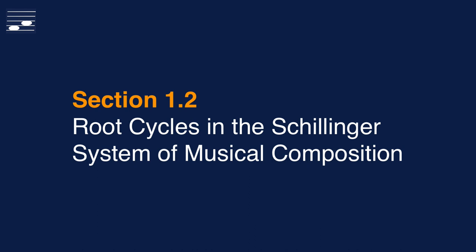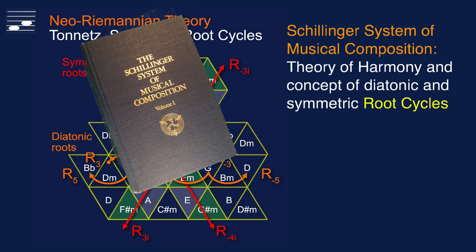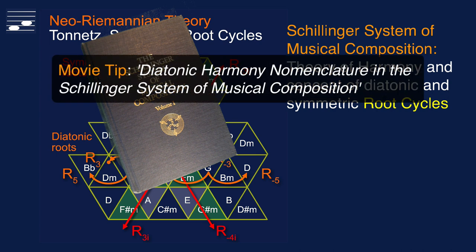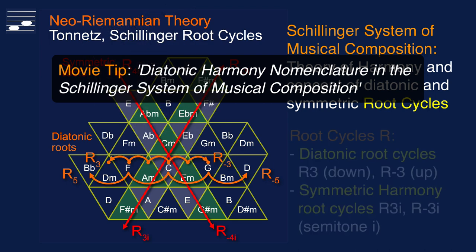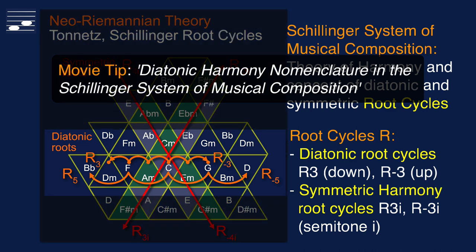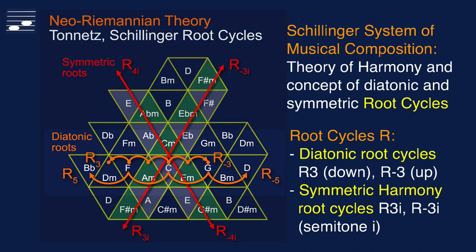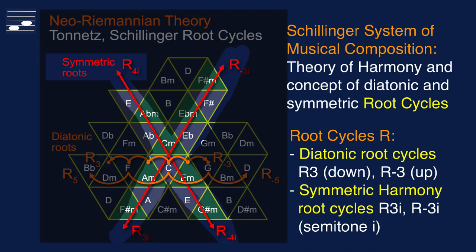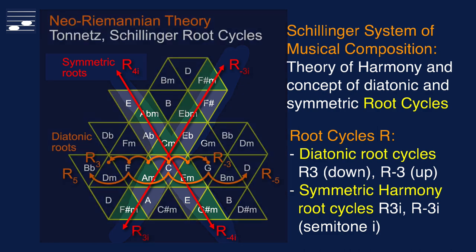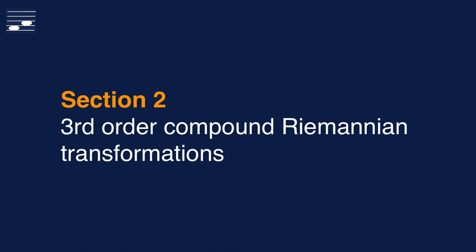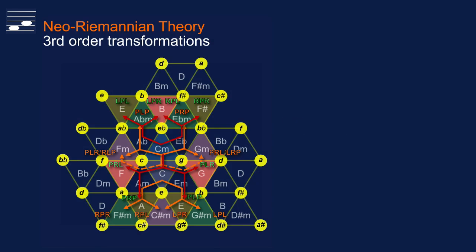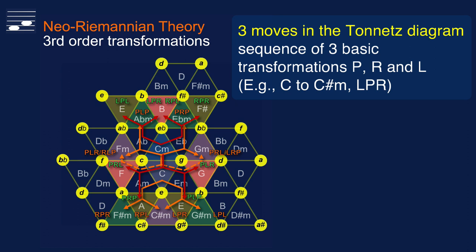We adopt the root cycle concept as proposed by Schillinger for diatonic and symmetric harmony systems in his System of Musical Composition. Projecting the root cycle patterns on the Tonetz diagram, we find diatonic system root cycles in the horizontal direction, with positive root movement — that is, descending thirds to the left. Symmetric system root movements by either three or four semitones lie in the diagonal direction in this diagram. This overview will be dissected during this video about third-order compound Riemannian transformations, created as three-element series from the elementary P, R and L transformations, corresponding to a path with three moves in the Tonetz diagram.